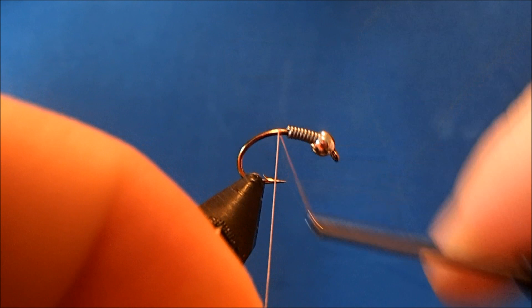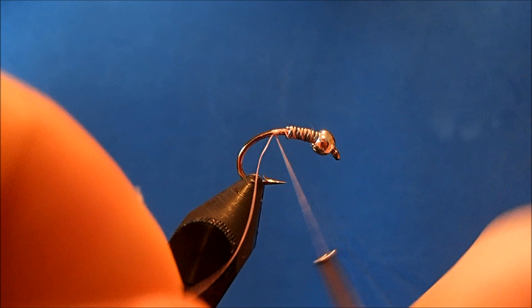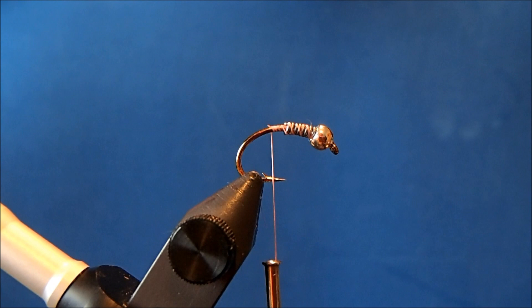The thread that I'm going to use is a 6-aught pink and I'll start behind the lead, take my wraps through, and then remove that tag.